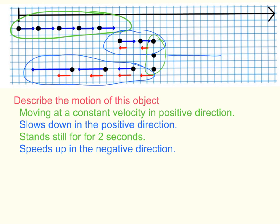And when we have dots that are piled on top of one another, such as here, that means an object is standing still. The position is not changing. The object is staying in the same place.